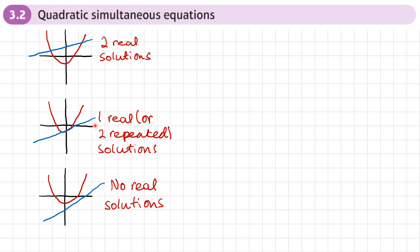In that case, there would be one real or two repeated solutions. Or it may be that the linear equation does not intersect the quadratic at all, and in this case there will be no real solutions.